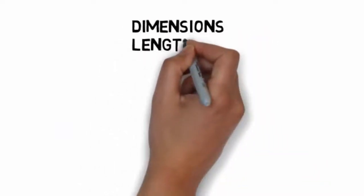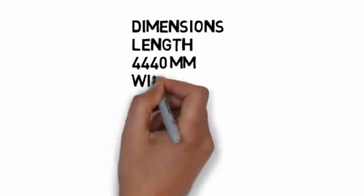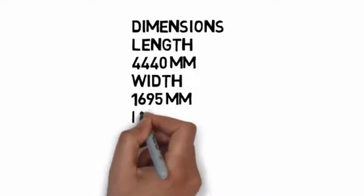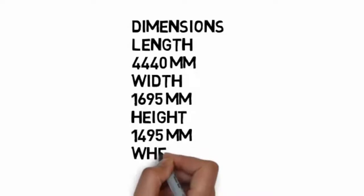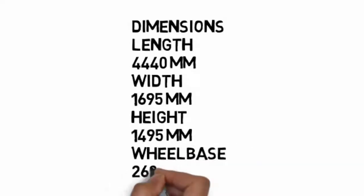Talking about the dimensions of this car. The length of the car is 4440mm, the width is 1695mm, and the height is 1495mm. The wheelbase of the car is 2600mm.